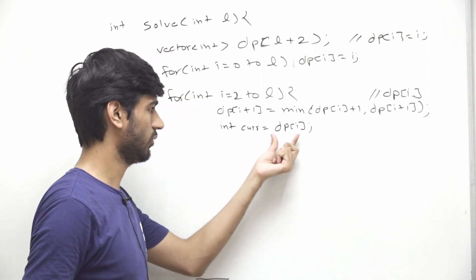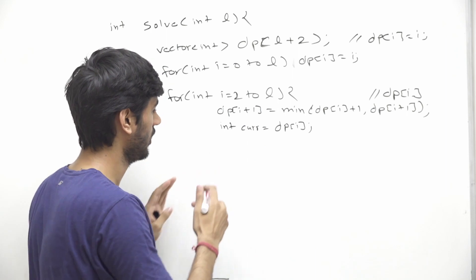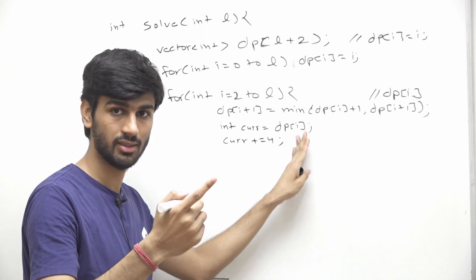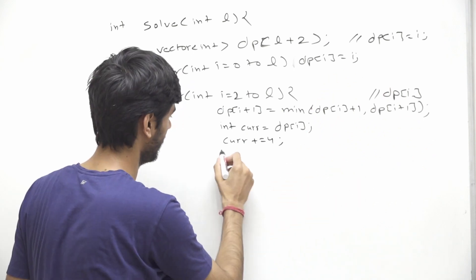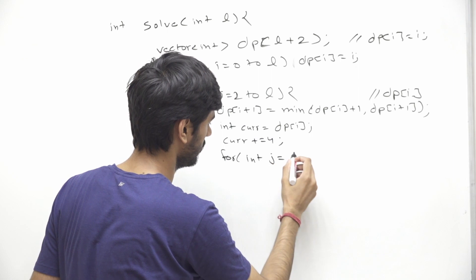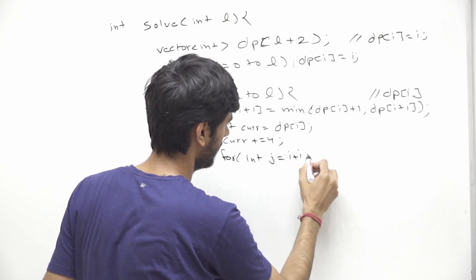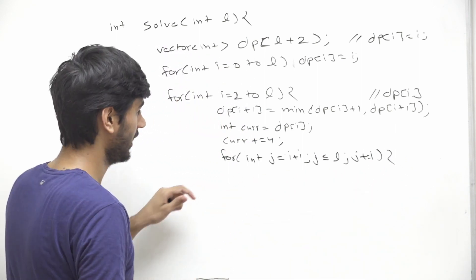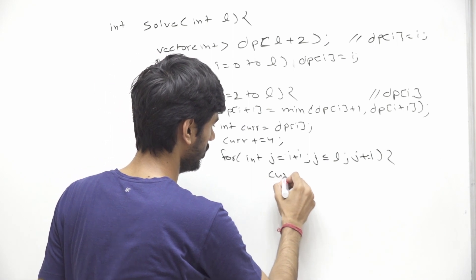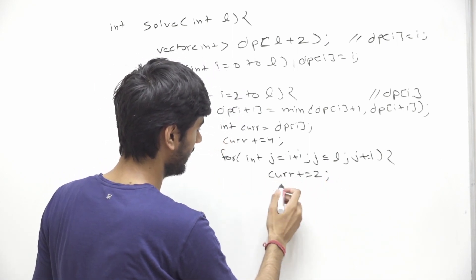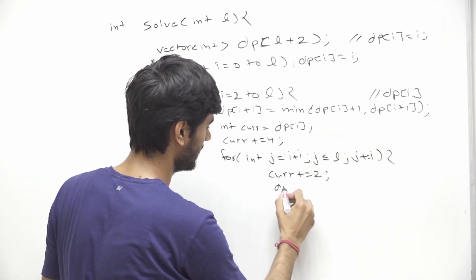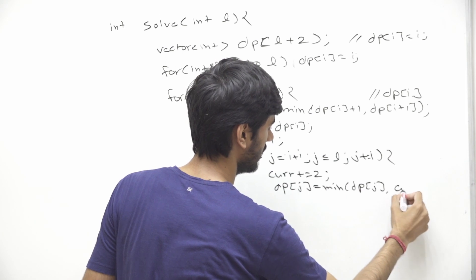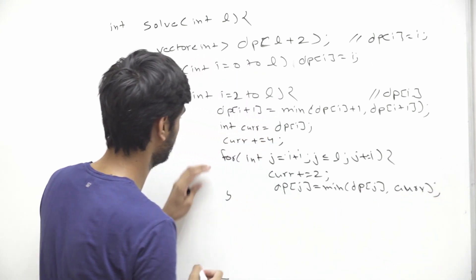When we are at i, we can update dp[i+1] = min(dp[i+1], dp[i] + 1) using one coin. Then we use four coins to register i, and iterate over all multiples of i with an inner for loop: j starts at 2*i, increments by i, and runs while j is less than or equal to l. For each multiple j, we can update dp[j] = min(dp[j], current_coins + 4 + 2*(j/i - 1)), jumping to each next multiple using two coins.